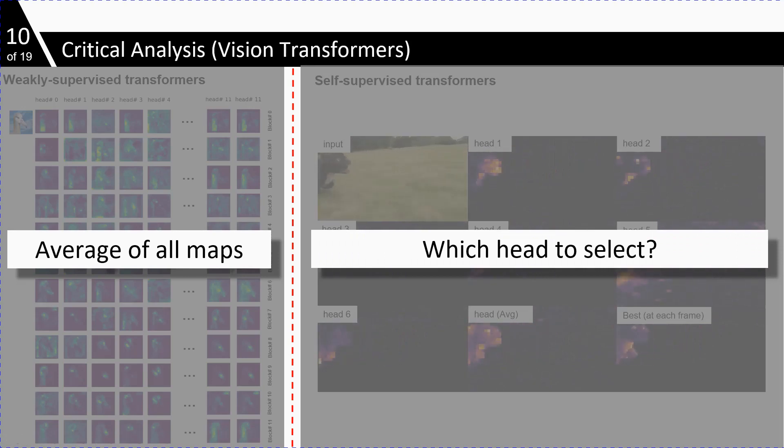To deal with this issue, we propose our method to extract pseudo-labels from these class tokens obtained from self-supervised transformers. And then we use these pseudo-labels to train localizers that can generate robust maps with high resolution.